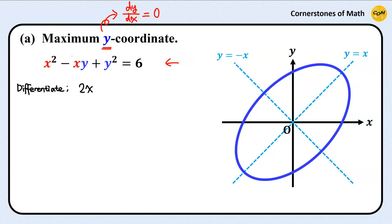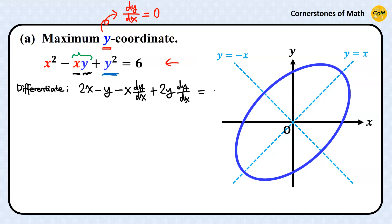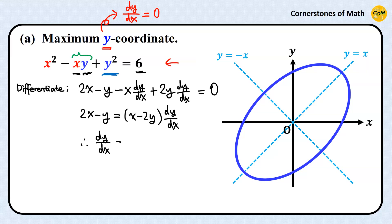First, we have 2x, and for the next term, we have to use the product rule. So, first, differentiating x gives 1, so we have 1 times y, which is just y, minus x times the derivative of y with respect to x, so dy over dx. Then, we need to differentiate y squared with respect to x using the chain rule. So, first, differentiating with respect to y gives 2y, times the derivative of y with respect to x, so dy over dx. The right-hand side is constant, so by differentiating, we obtain 0. Therefore, we have 2x minus y equals x minus 2y, times dy over dx.